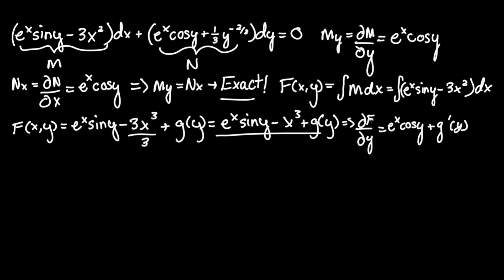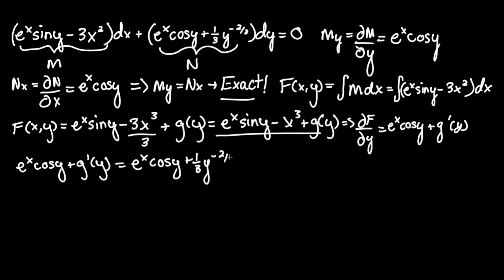Since we took the partial derivative of F, this equals the N term. Setting them equal: e to the x cosine y plus g prime of y equals e to the x cosine y plus one-third y to the power of negative two-thirds. Isolating g prime of y, the e to the x cosine y terms cancel, leaving g prime of y equals one-third y to the power of negative two-thirds. We need g of y, not g prime of y, so let's integrate this.